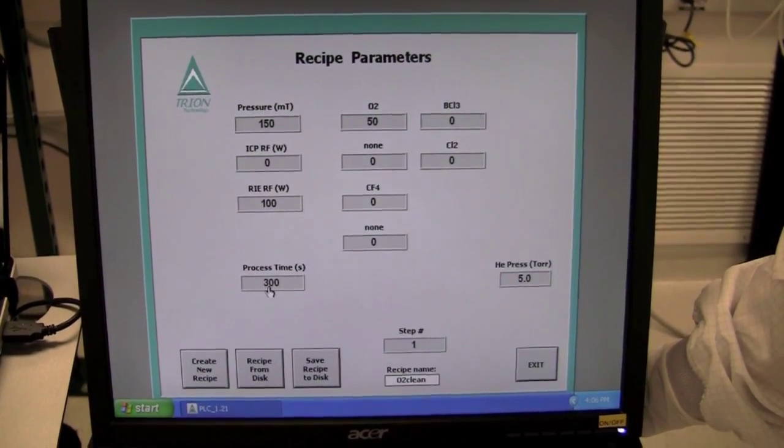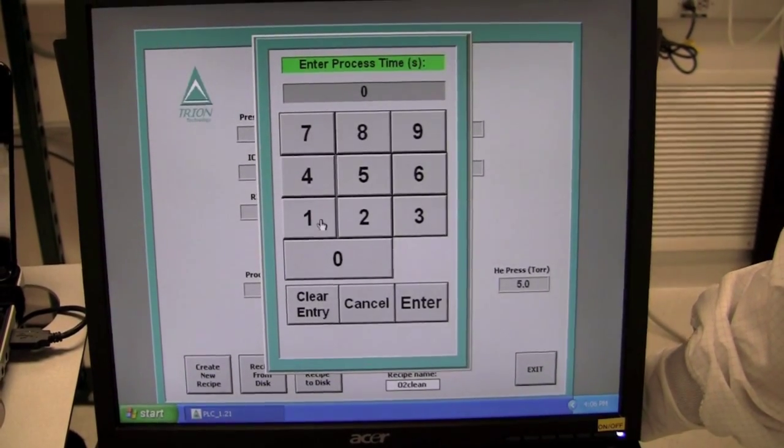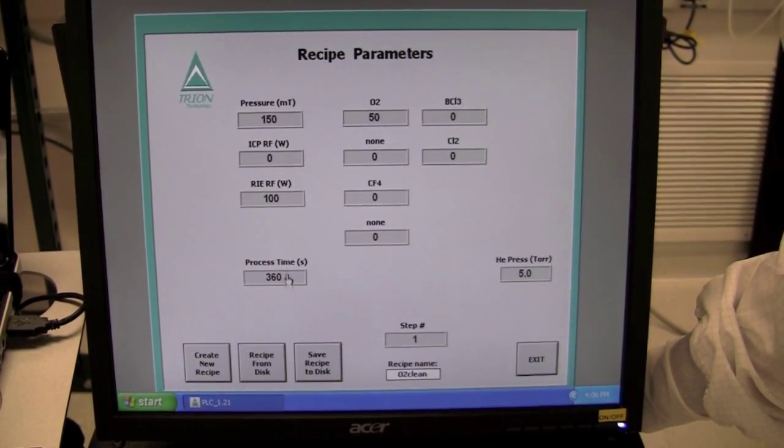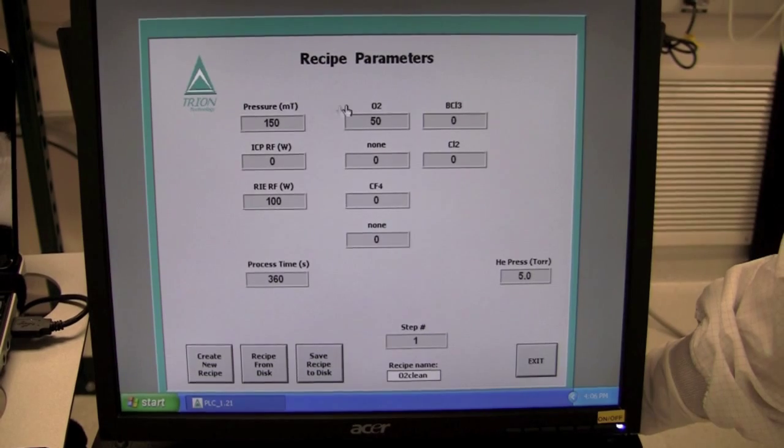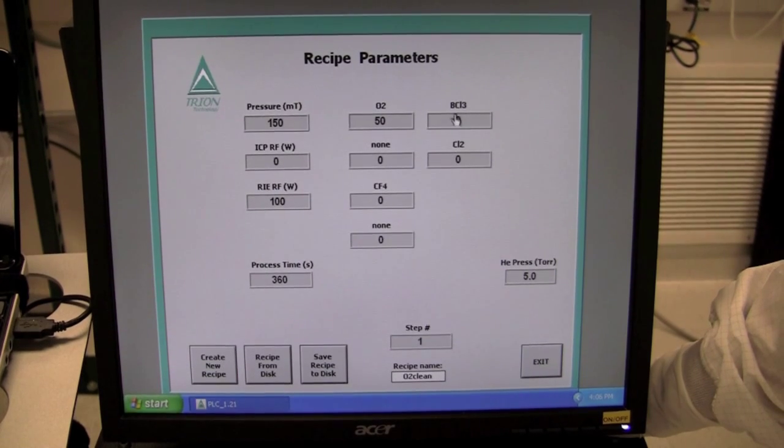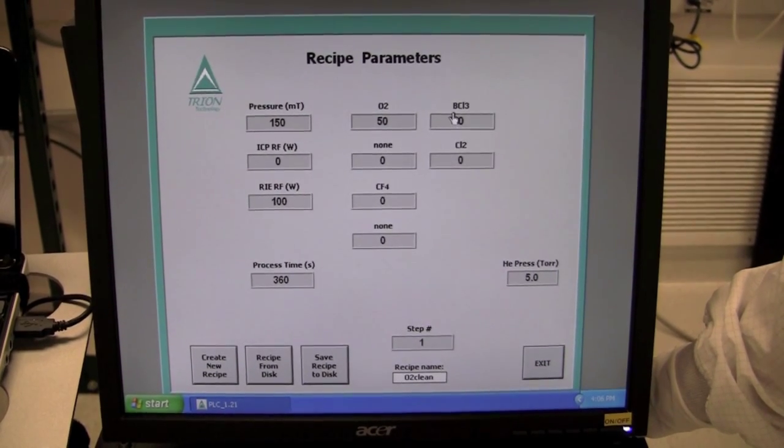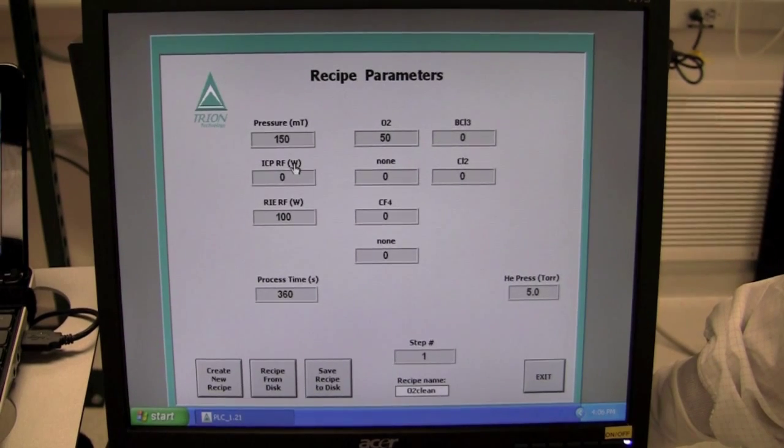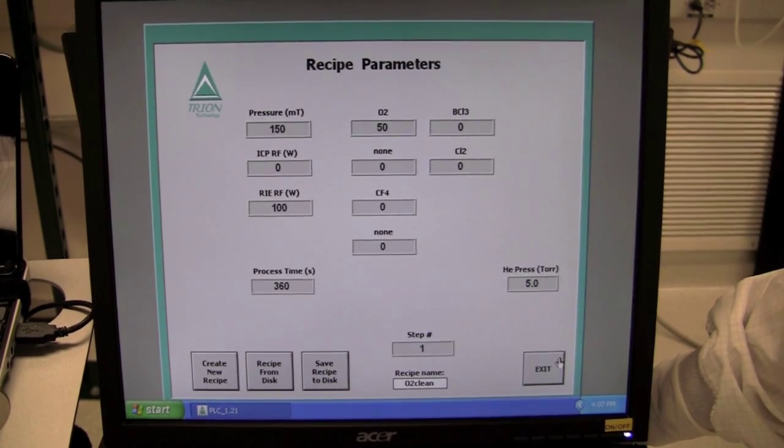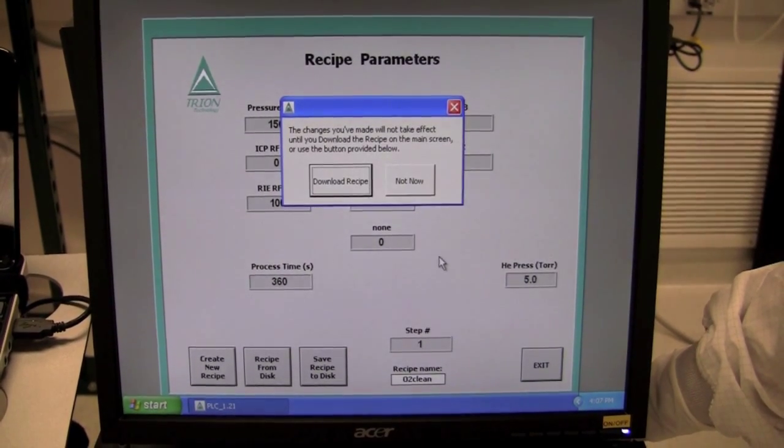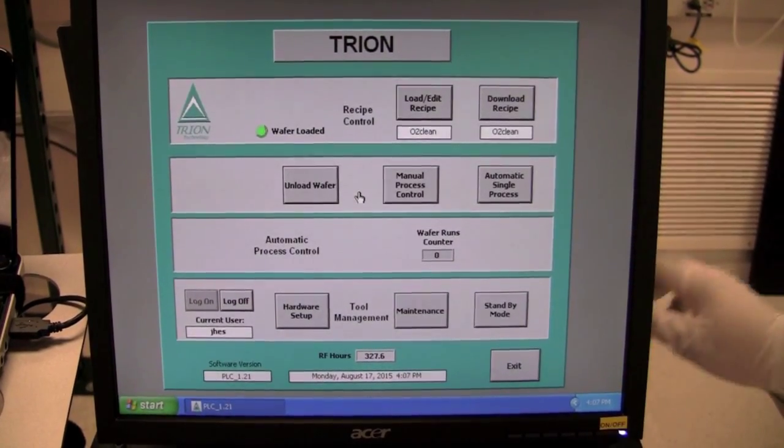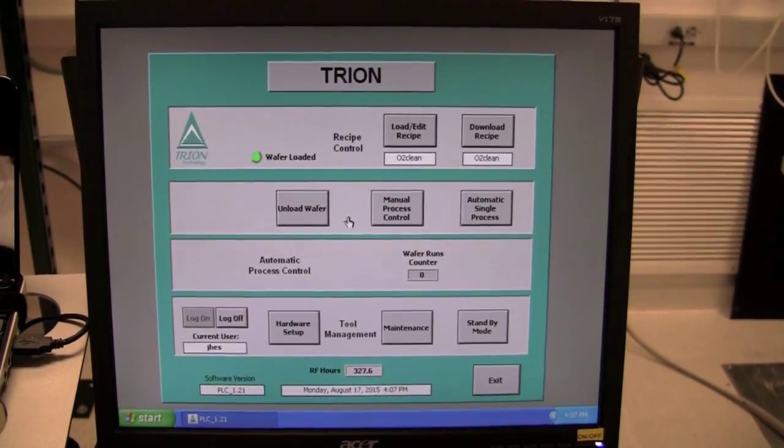So, for most users, we only allow them to change the process time. So, to do that, you click on the time itself and it'll give you a process time. You can re-enter it all you want. So, I'm going to say 360, enter, now the process time is there. We have a couple of other parameters as well. We have gas flows with oxygen, CF4, and a couple of chlorine gases that are not installed in the system. We also have a process pressure as well as ICP and RIE forward power. So, next we hit exit and we download the recipe.